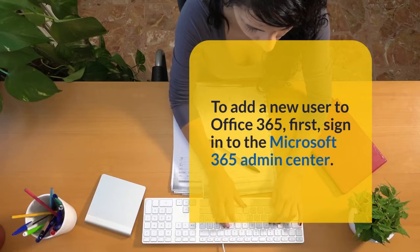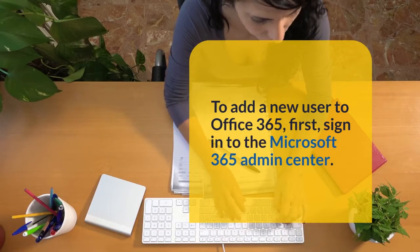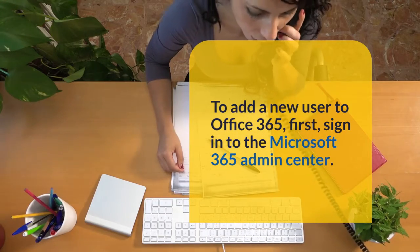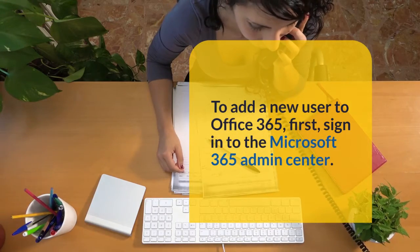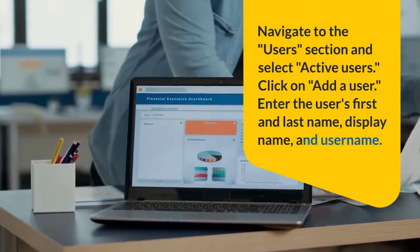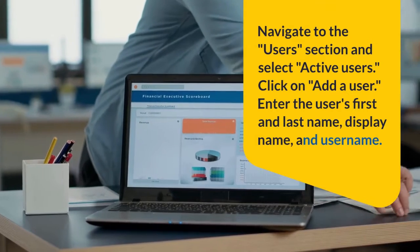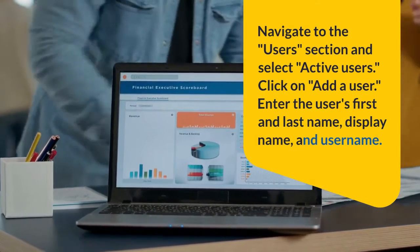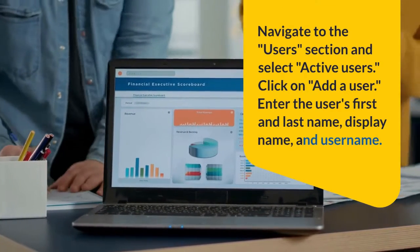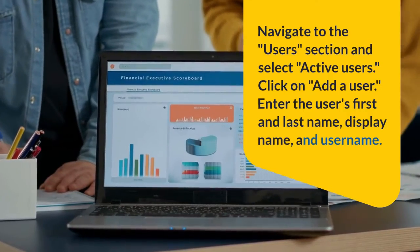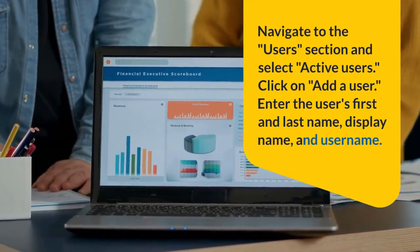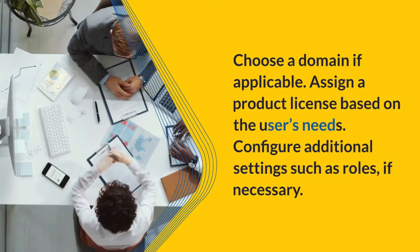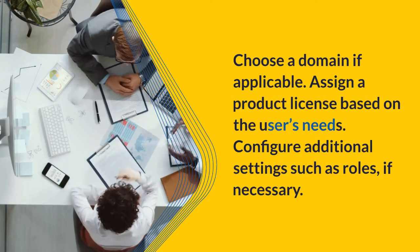To add a new user to Office 365, first sign in to the Microsoft 365 Admin Center. Navigate to the Users section and select Active Users. Click on Add a user. Enter the user's first and last name, display name, and username. Choose a domain if applicable. Assign a product license based on the user's needs.